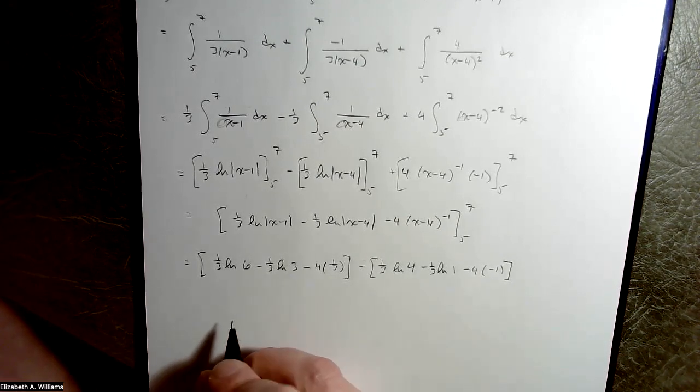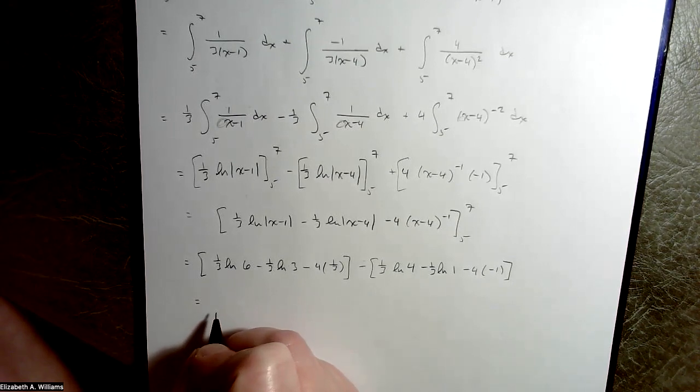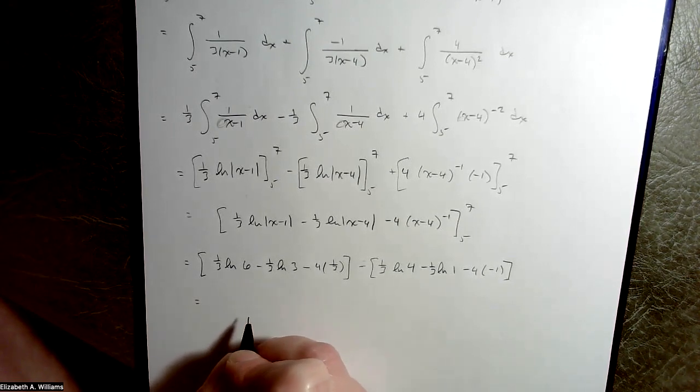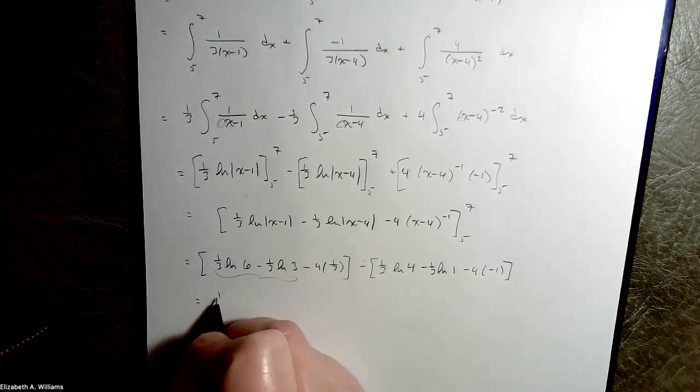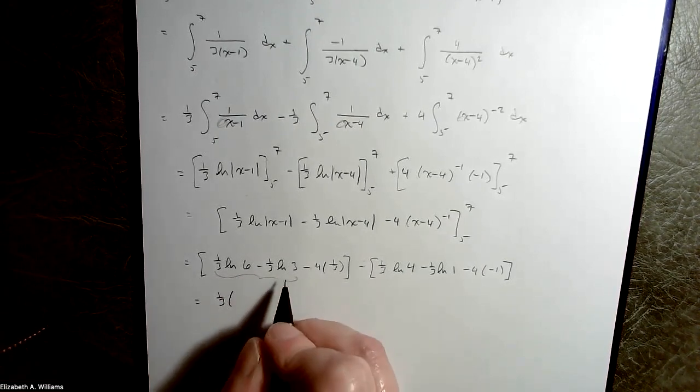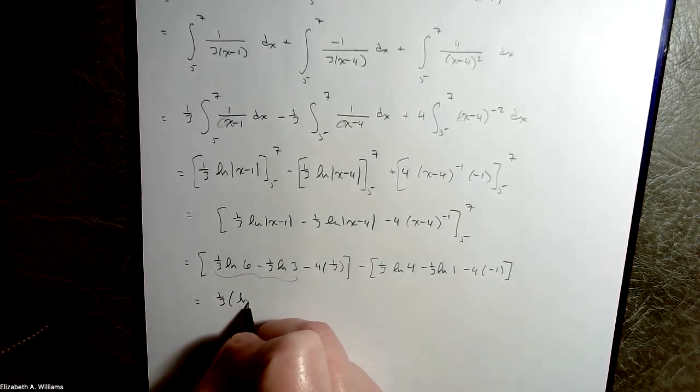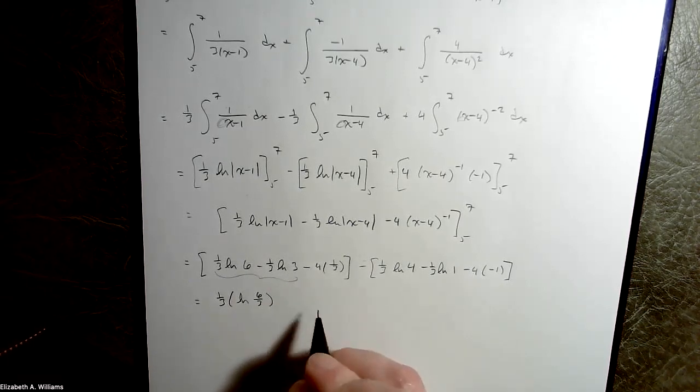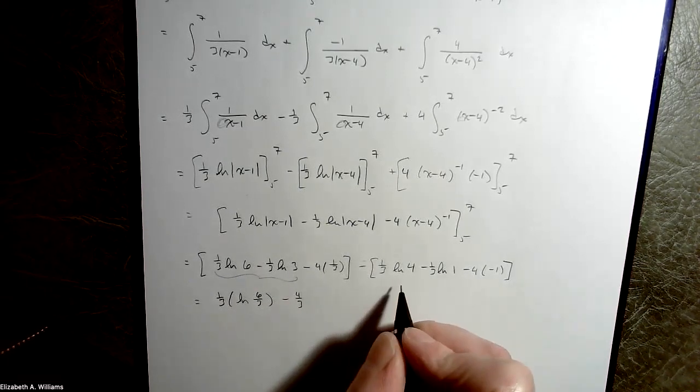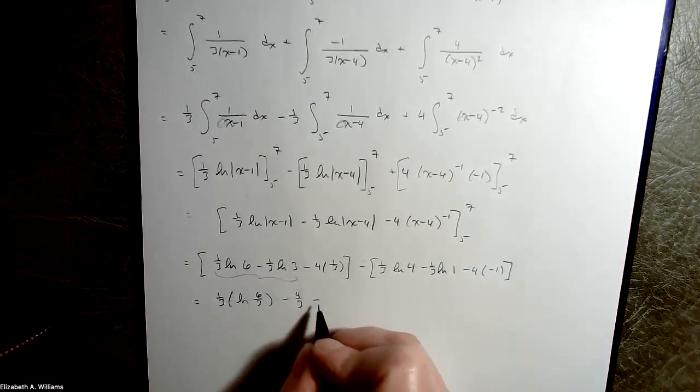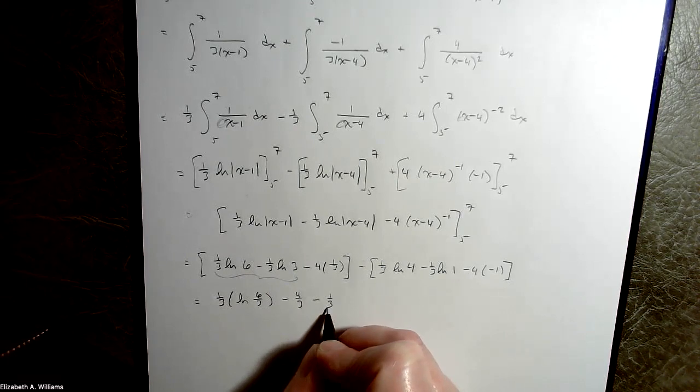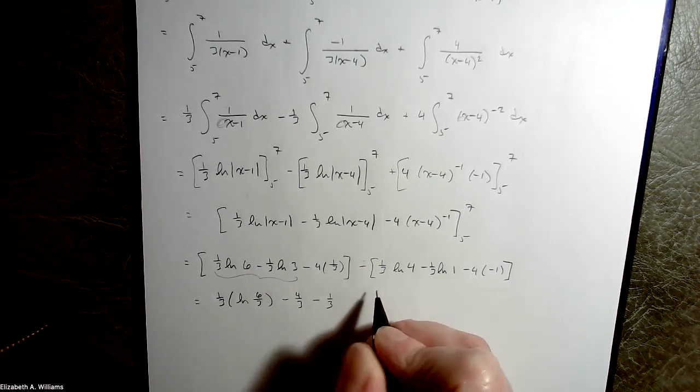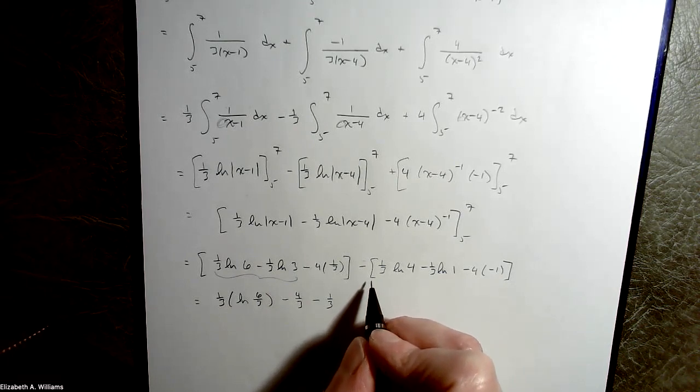I'm looking at the mark scheme as I'm writing this to you. This should all boil down if you wiggle everything out. You can do some combining log stuff. You could factorize out 1/3. Then you have natural log of 6 minus natural log of 3, which is the natural log of 6 divided by 3, which is the natural log of 2. And then that's minus 4/3.